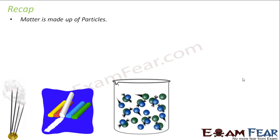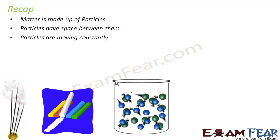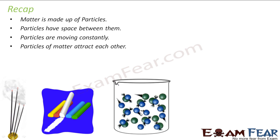Any matter is made of particles. There is space between these particles. These particles are in constant motion — I have made a picture showing this movement. They attract each other, and that's why chalk is easier to break while iron is harder to break. You can say there is a force of attraction between these particles.